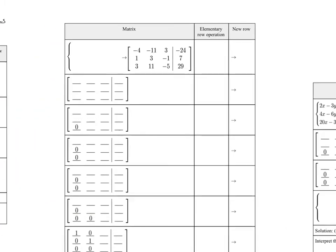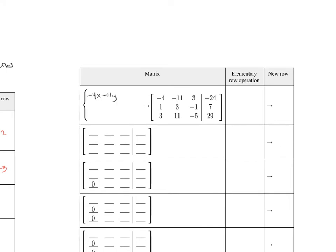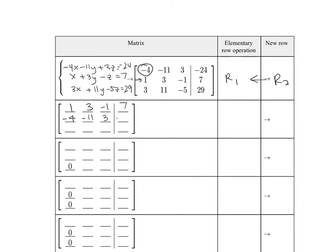Let's look at the next system and see what kind of weird thing happens here. We can get some practice writing our augmented matrix back into its system of equations. We have x plus 3y minus z equals 7, and 3x plus 11y minus 5z equals 29. The first thing we want to do is make sure we have a 1 in that upper corner — I see a 1 already there, so if we just interchange rows that works. Taking row 1 and interchanging with row 2 gives us 1, 3, negative 1, 7, and then negative 4, negative 11, 3, negative 24. Our last row stays the same.